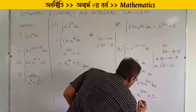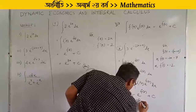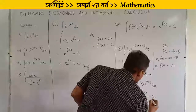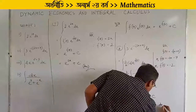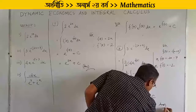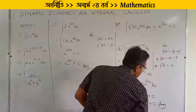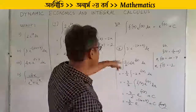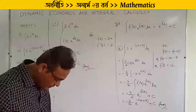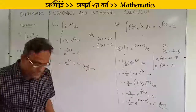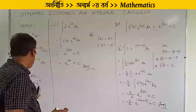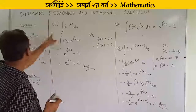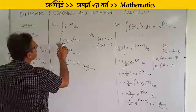So e to the power f(x), where f(x) is minus 2x plus 7, gives us the result: e to the power (minus 2x plus 7) divided by minus 2, plus c. OK, second problem.